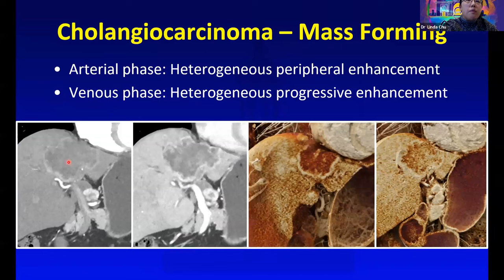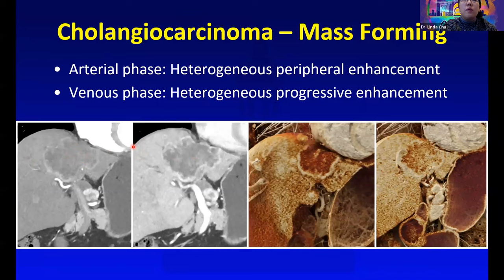This is a more discrete mass-forming type, in which we see heterogeneous arterial enhancement with progressive enhancement. This progressive enhancement of a heterogeneous lesion would be a good imaging appearance for cholangiocarcinoma.